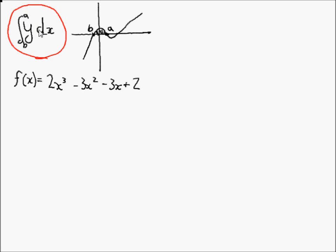For instance, let's say y, or f of x, is equal to 2x cubed minus 3x squared minus 3x plus 2. This looks something like this, crossing the y-axis at 2, where b is equal to minus 1 and a is equal to a half. This shaded area here is the area we're trying to find — the area bounded by those two upper and lower limits.